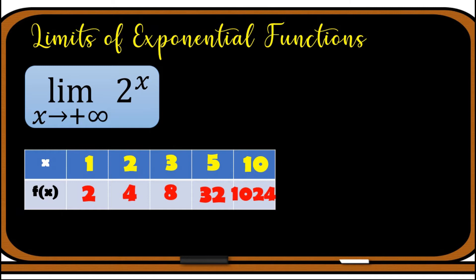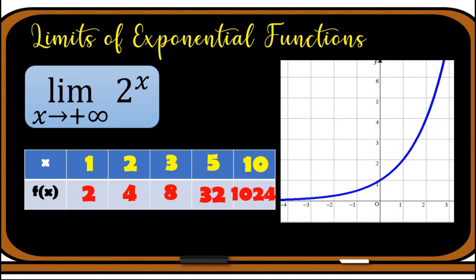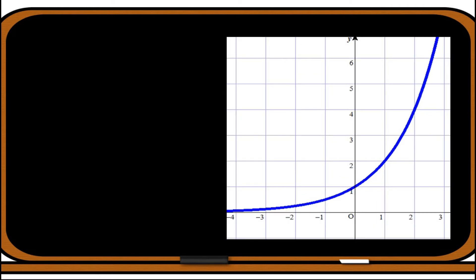Thus the limit of 2^x as x approaches positive infinity equals positive infinity, meaning there is no finite limit — it goes to positive infinity. Looking at the graph of 2^x, as x approaches positive infinity, or as we go to the right, the graph goes up, meaning the f(x) values are approaching positive infinity. Hence, the limit of 2^x as x approaches positive infinity is positive infinity.